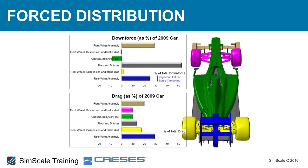In Formula 1 we don't look only at downforce, but at efficiency — the ratio of downforce to drag. The floor and diffuser are by far the most efficient parts: high downforce with very low drag. The rear wing, in contrast, is aerodynamically inefficient — it generates significant downforce but also too much drag.